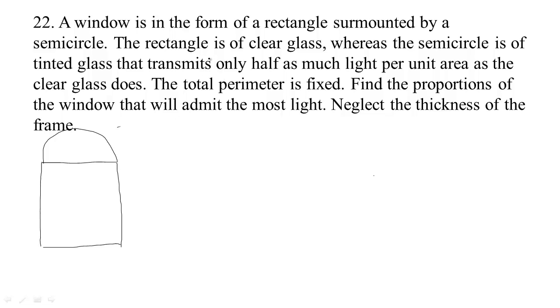Now, the rectangle is of clear glass, so it's clear down here, and the semicircle is tinted. The tinted glass only transmits half as much light per unit area.